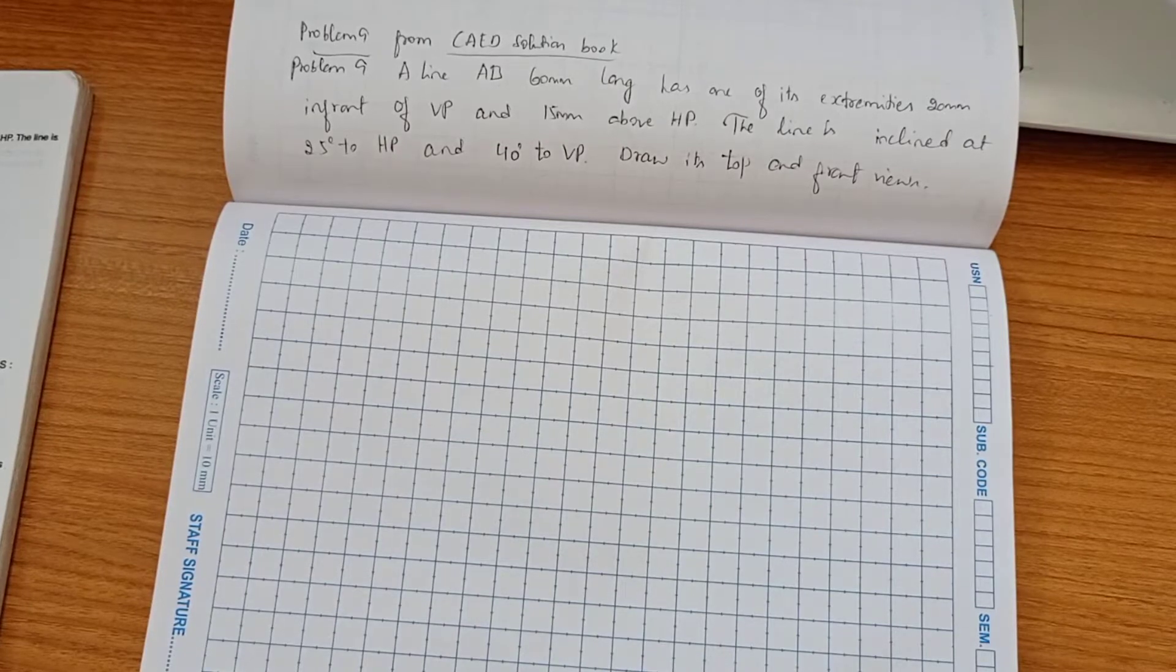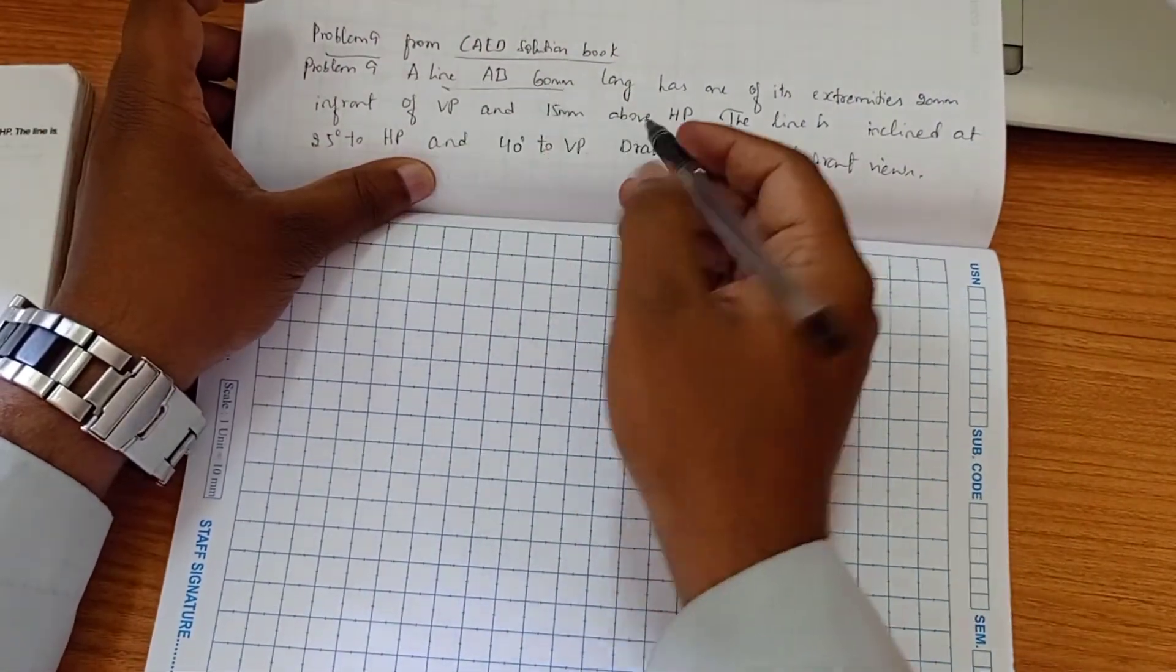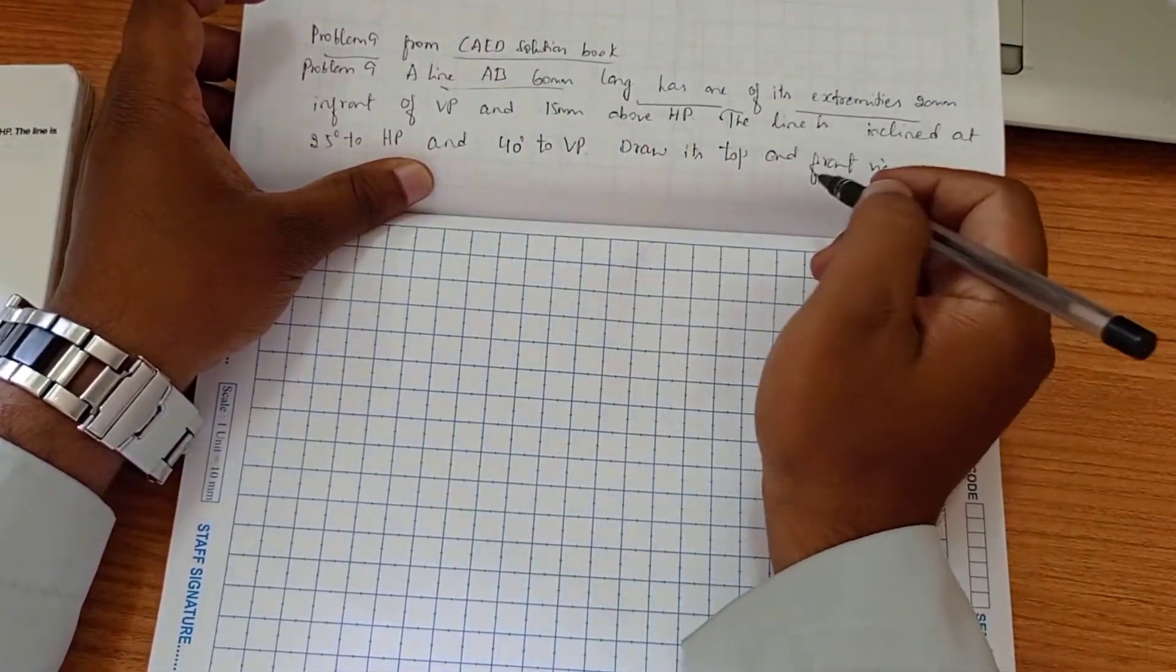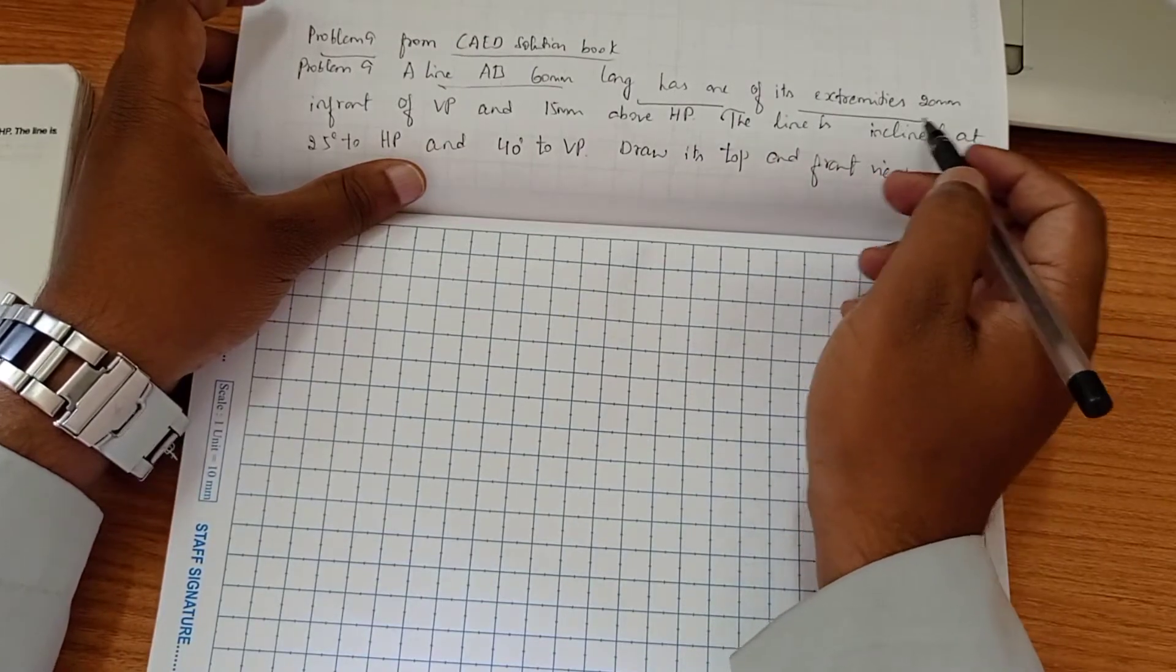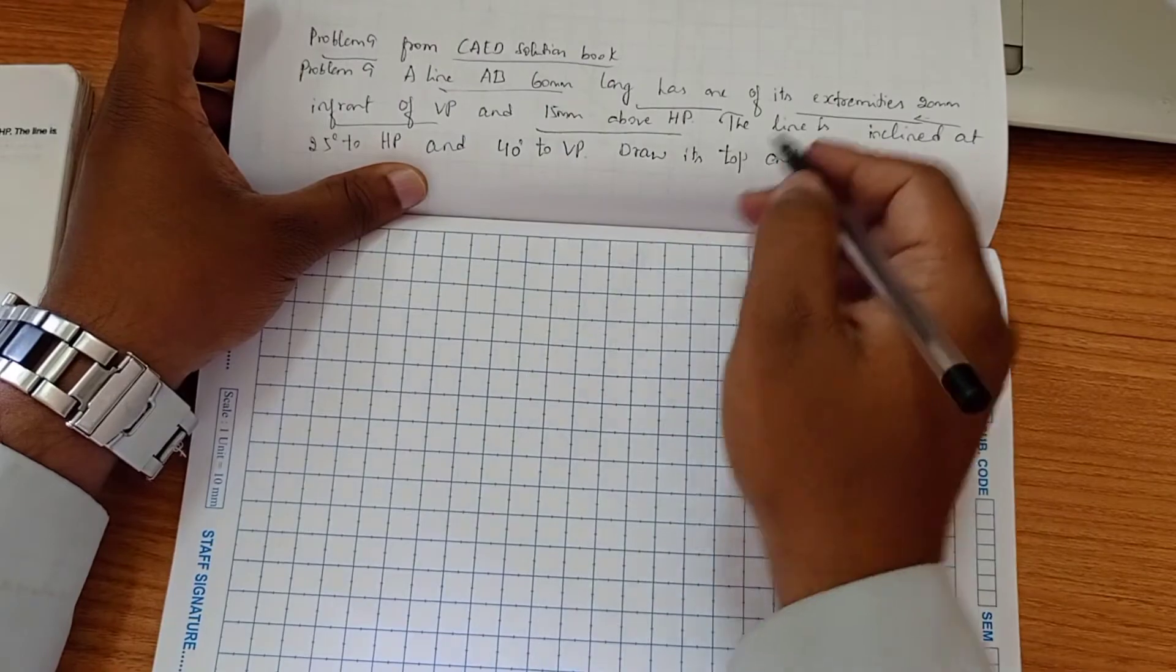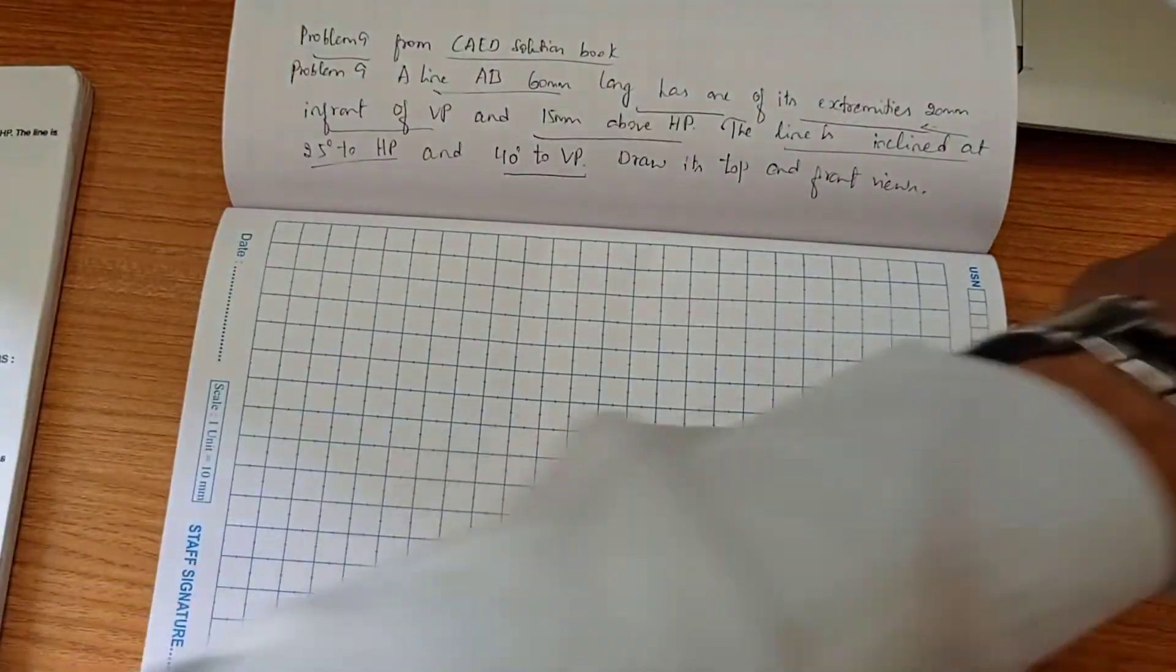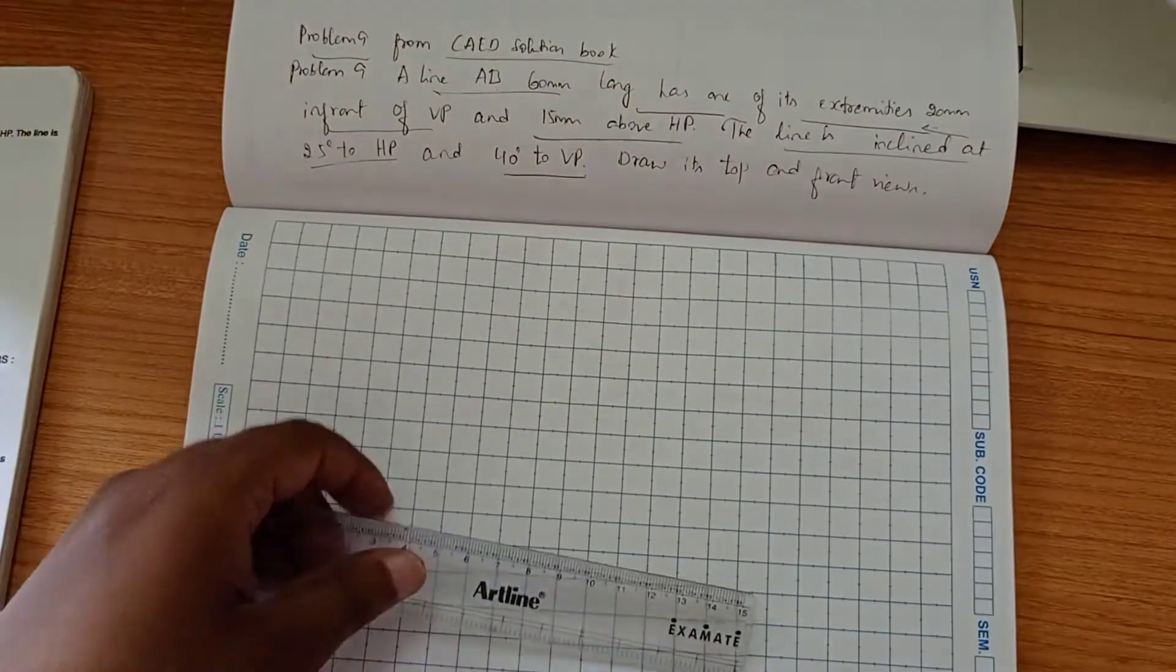We solved problem number 9 from CAD solution book. In this problem they have given line AB 60 mm, as one of its extremities or end point 20 mm in front of VP and 15 mm above HP. The line is inclined at 25 degree to HP and 40 degree to VP. Now we will proceed with our solution here.